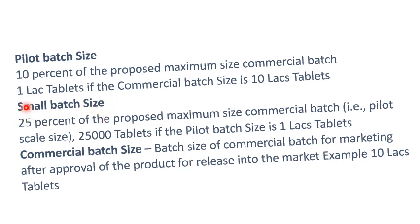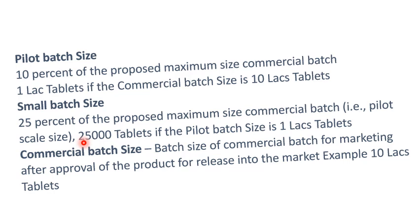Regarding small batch size, as per the US guidelines, 1 small batch and 2 pilot scale batches can suffice the requirement. The small batch size will be 25% of the proposed maximum commercial batch — that is, 25% of the pilot scale batch. So the small batch size may be 25,000 tablets if the pilot batch size is 1 lakh tablets.